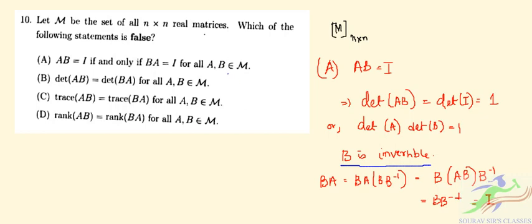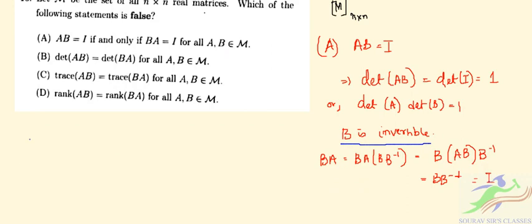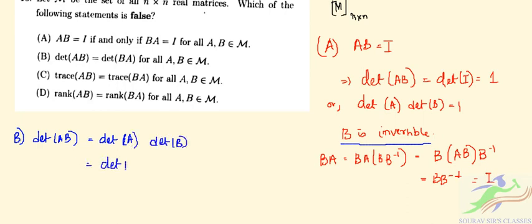Option B: det(AB) = det(A) × det(B), which can also be written as det(B) × det(A) = det(BA). So the second option is also correct.